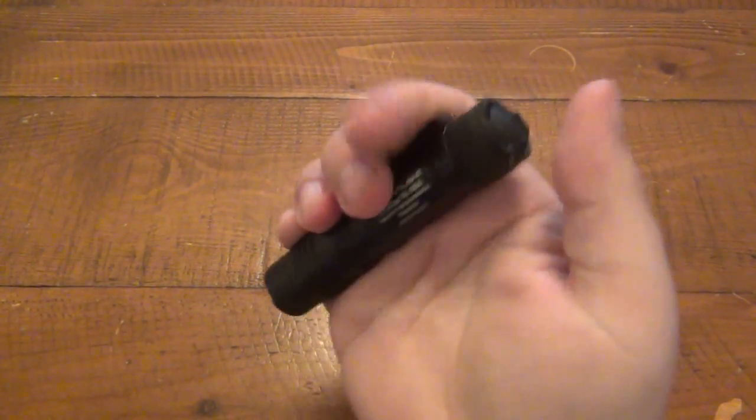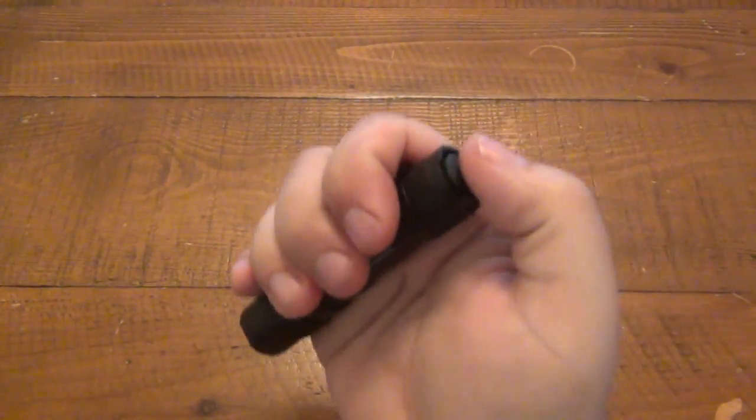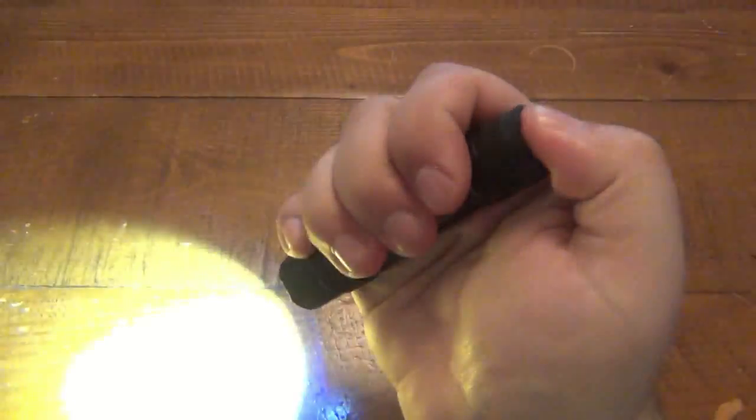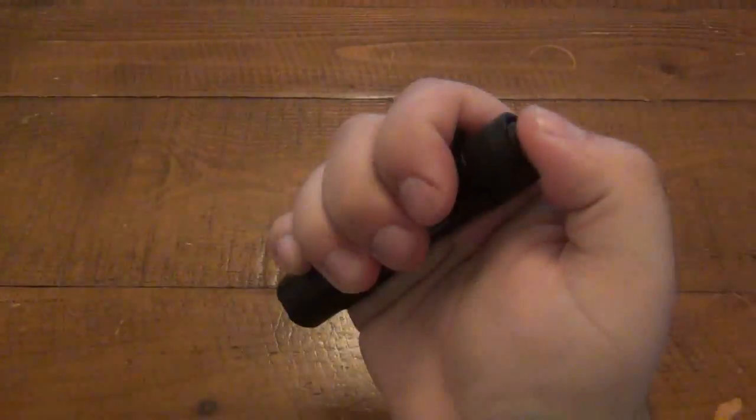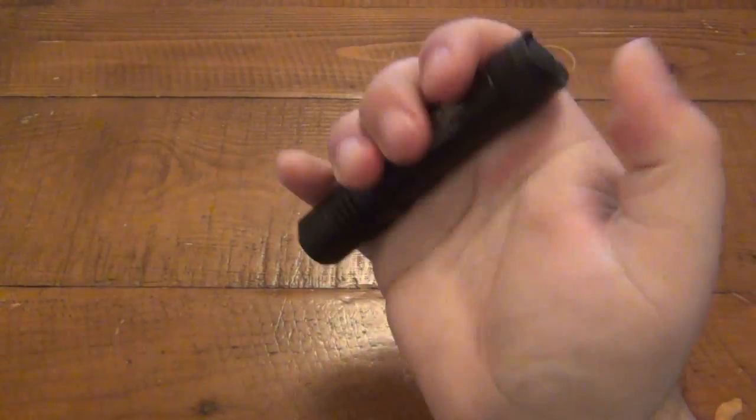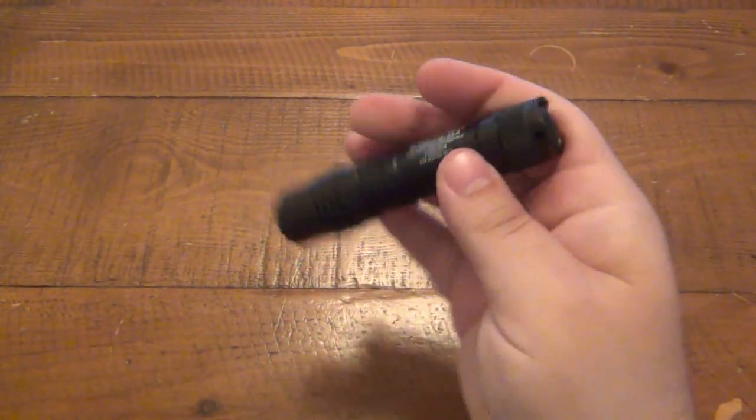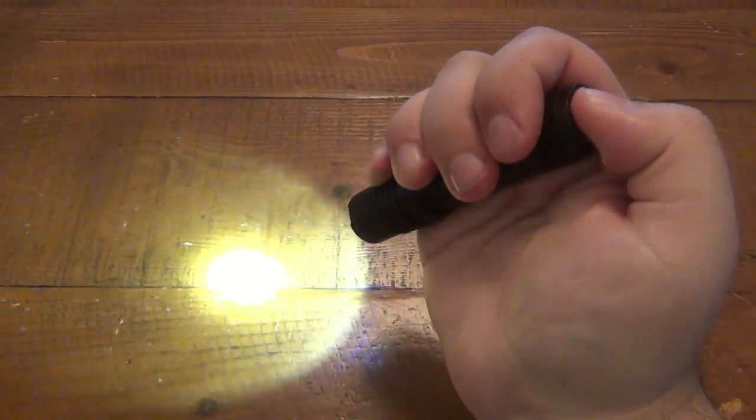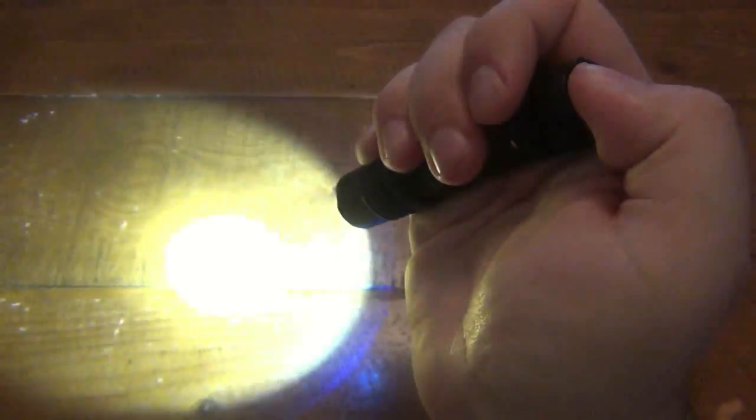But anyway, so yeah, let's do the 10 tap again, and we'll get to our third user interface. So 1, 2, 3, 4, 5, 6, 7, 8, 9, 10, and hold, and it shuts off. So now, every time you turn this light on, it's going to be in low mode, unless you double tap, low, high. Then you can put it in high mode.